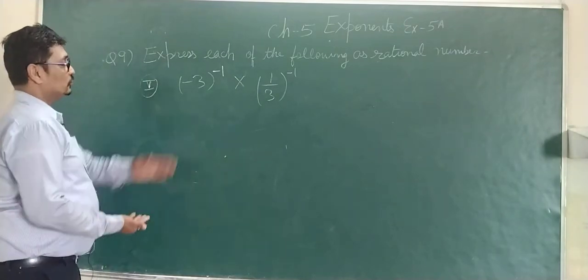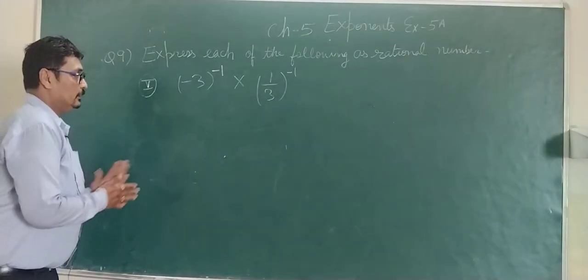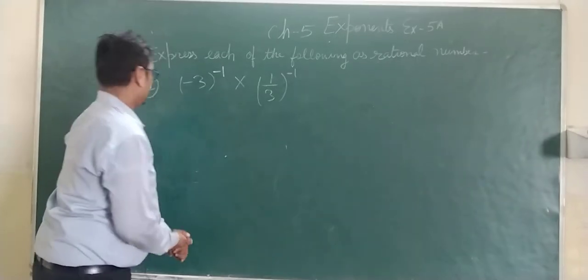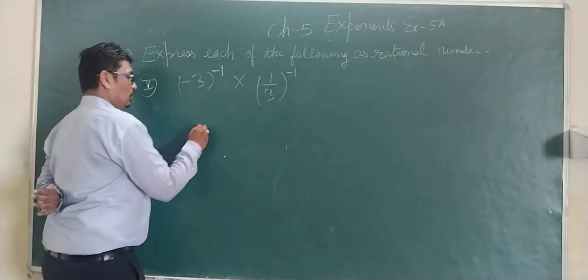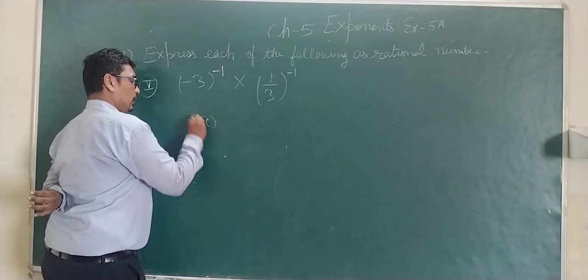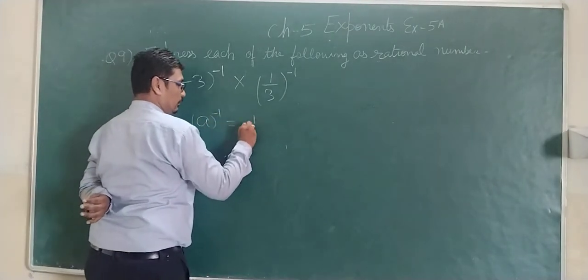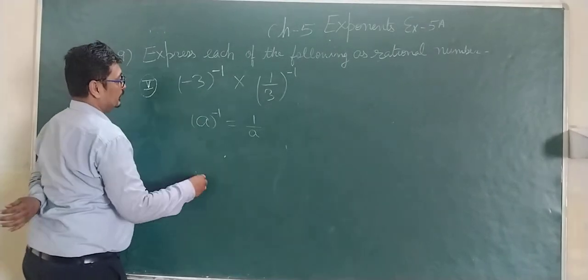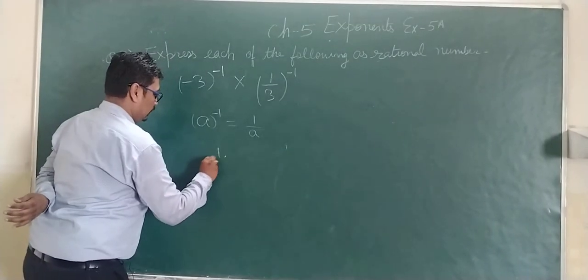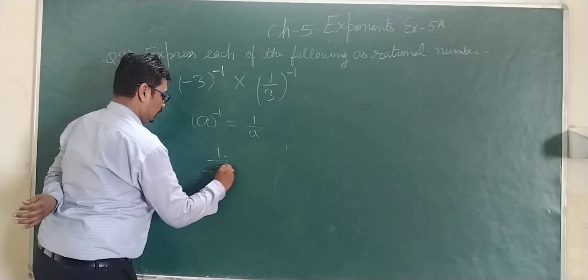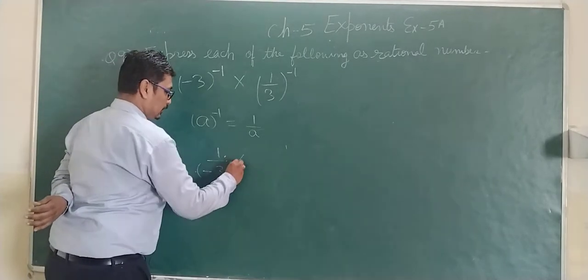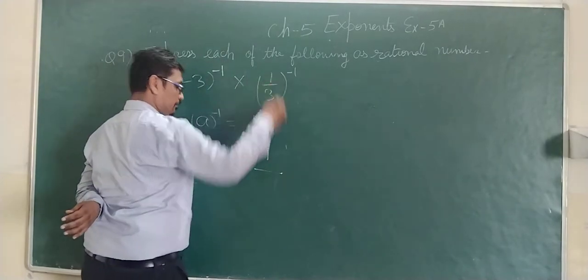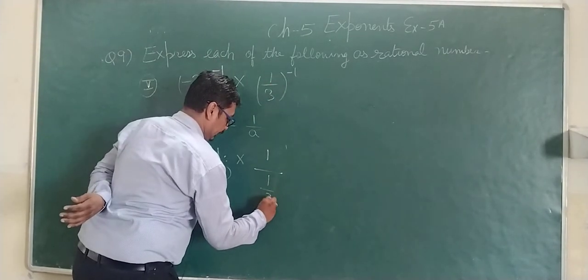5th part: minus 3 raised to the power minus 1. We know a to the power minus 1 is 1 upon a. So this can be written as 1 upon minus 3.